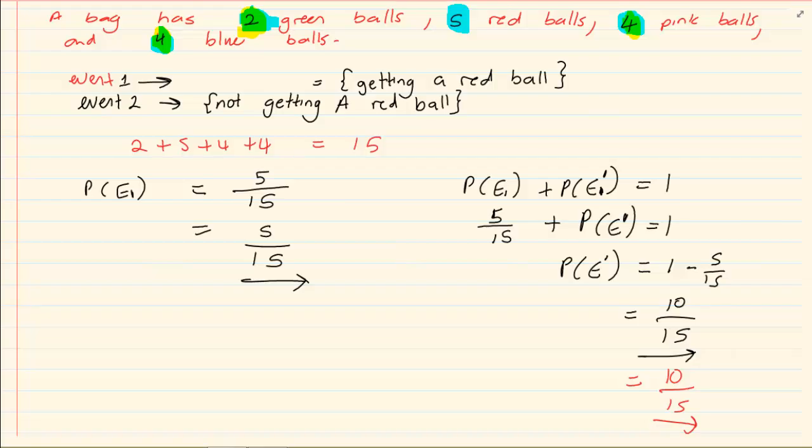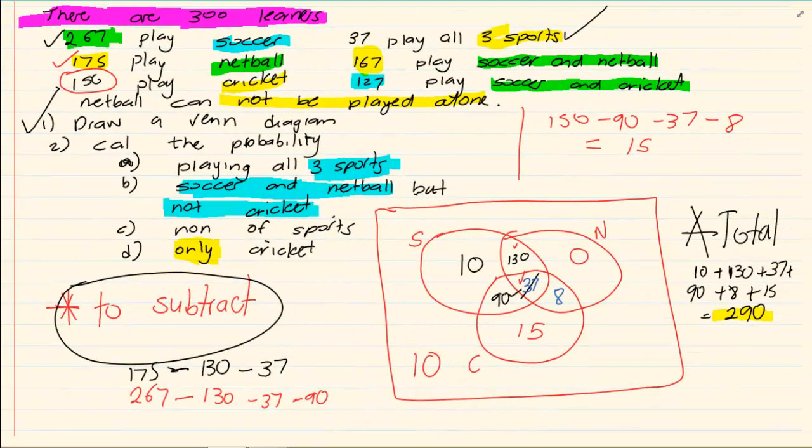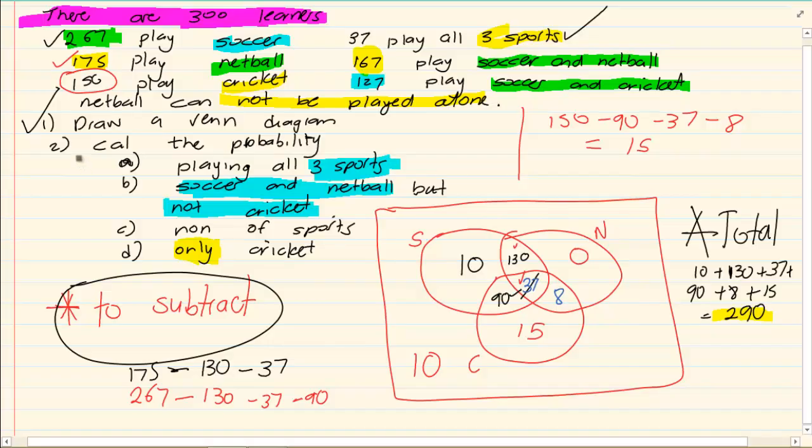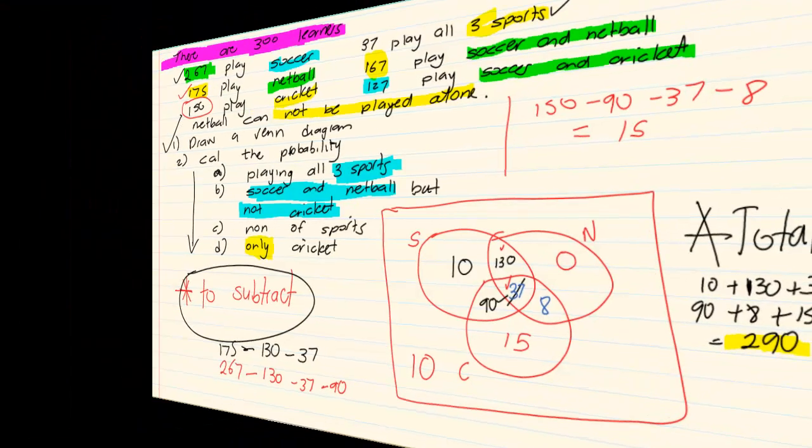Now let us take the following example. Okay, we had done this one before where we had discussed the learners were playing soccer, netball and cricket. Now we are working with the exact same Venn diagram. I am just going to show you how besides the standard probability that we have already done, how the questions can change slightly.